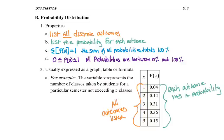Each of these outcomes has a probability listed. A 4% chance of taking one class, 14% chance of taking two classes, etc.